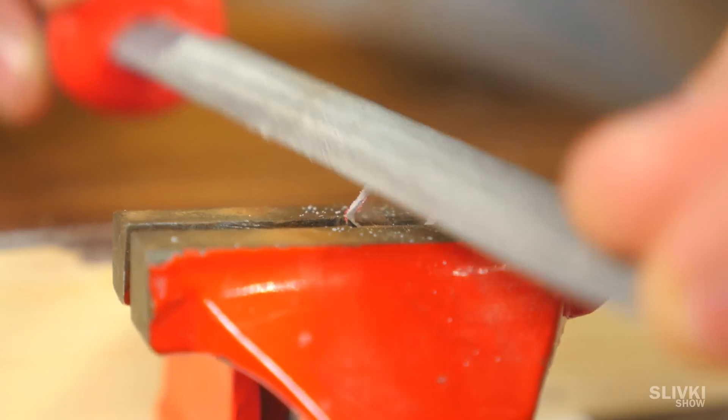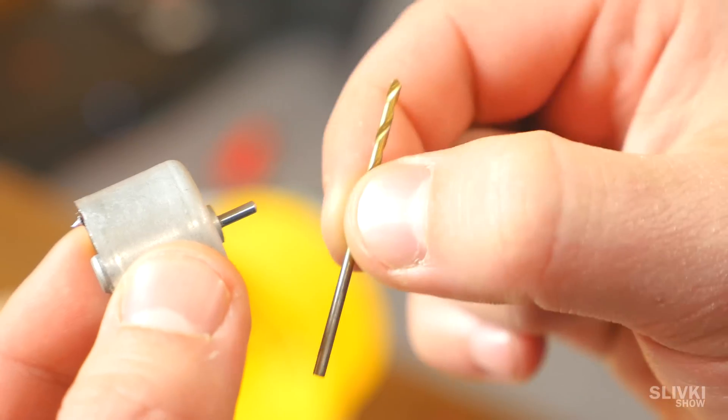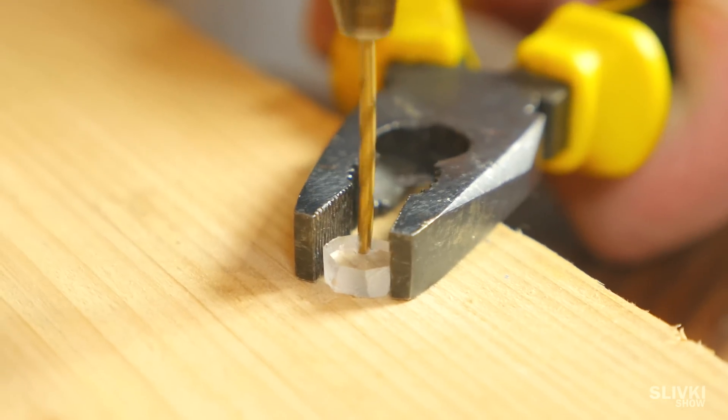Next, using a file, we should give a rounded form as much as possible. Having chosen the drill bit by the diameter, roughly diameter of a shaft, make a mark and drill a hole in the center.